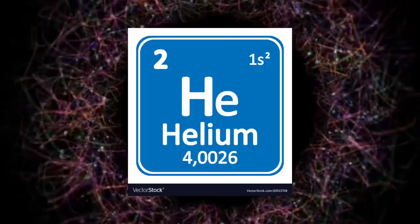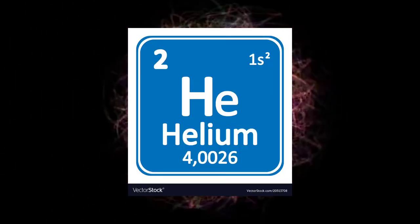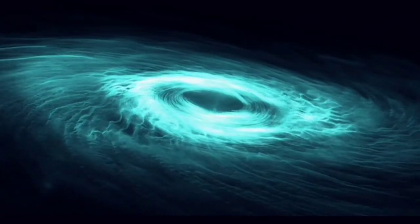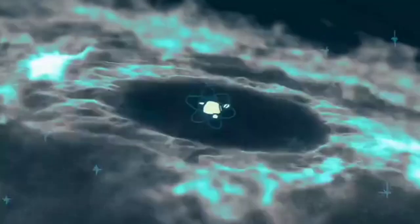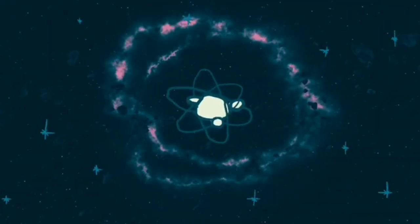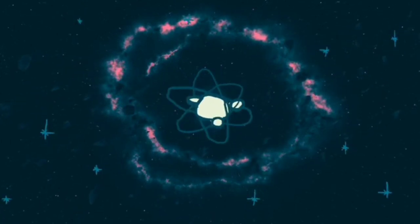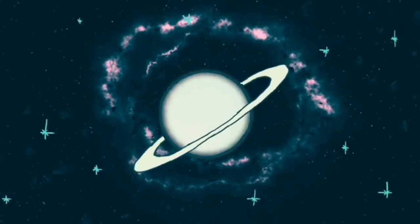Within a few hours of the big bang, the production of helium and other elements would have stopped. And after that, for the next million years or so, the universe would have just continued expanding without anything much happening. Eventually, once the temperature had dropped to a few thousand degrees, and electrons and nuclei no longer had enough energy to overcome the electromagnetic attraction between them, they would have started to combine to form atoms.